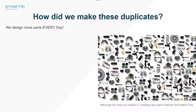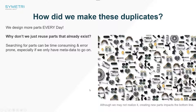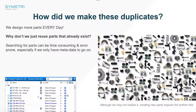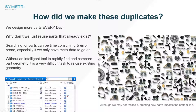Every day we design more and more duplicate parts. From a management point of view, someone's probably sitting there pulling their hair out going, why don't you just reuse the parts that already exist? The problem is the tools we have today are probably not fully formed. Searching can be quite error-prone because most of us are working on the metadata that exists inside of Vault — things like part number, description, material, the person who created it, the project — but we're not actually finding those specific duplicates. Without an intelligent tool to find these components, it can be quite difficult.